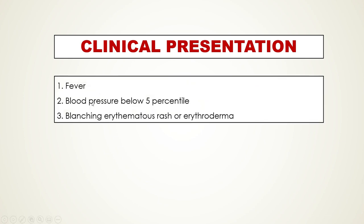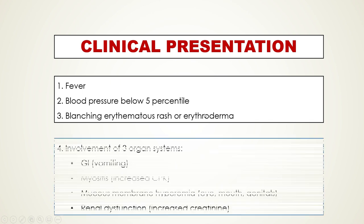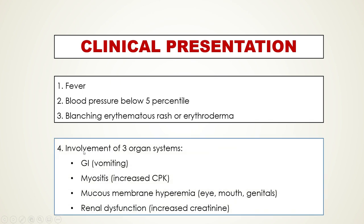There are certain criteria for diagnosing toxic shock syndrome. Patients must have fever, a blood pressure below the fifth percentile, and a blanching erythematous rash or erythroderma, which is a diffuse red rash.